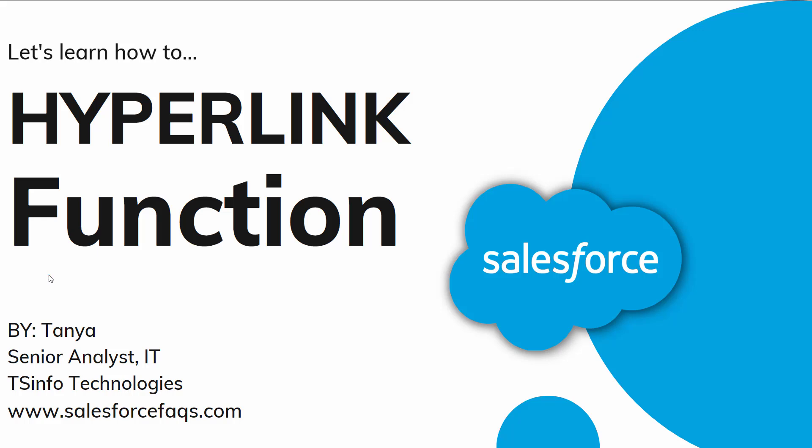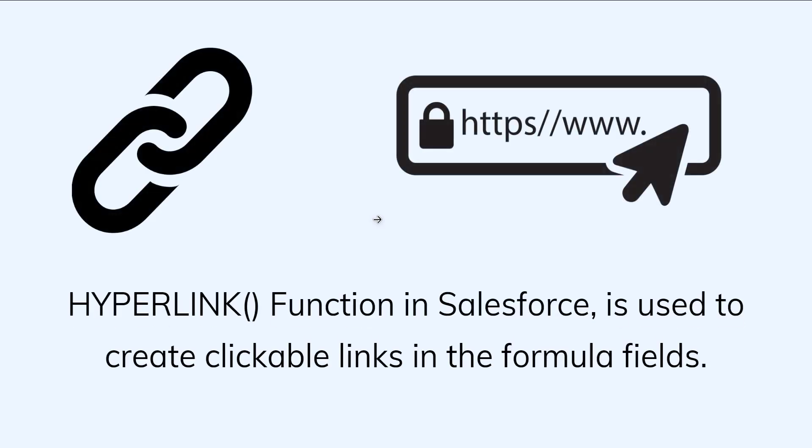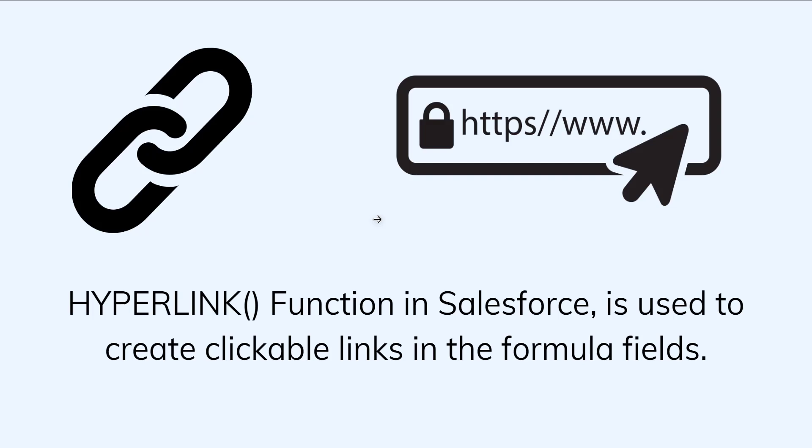We will learn this concept for both Salesforce Lightning and Classic user interfaces. The HYPERLINK function is one of the text functions in Salesforce that is used to create clickable links in a formula field. We can use a URL-specified link that is linkable from text, to redirect to various destinations like external websites, documents, records, images, videos, or a direct phone dialer.